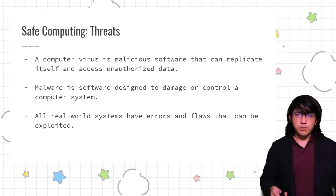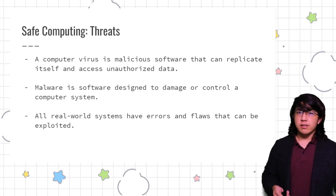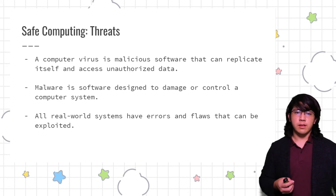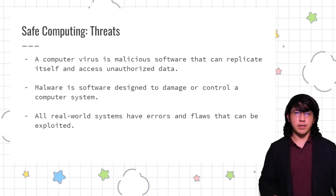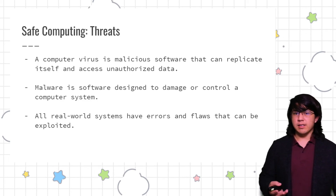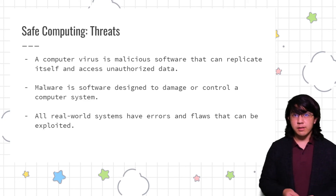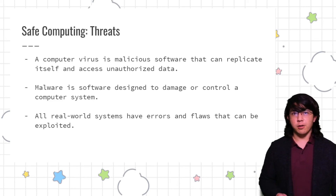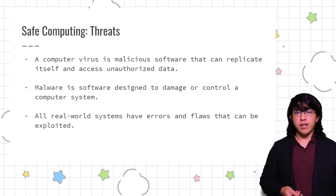There are some dangers when using computers — people do use computers maliciously. They might write viruses: software that works just like a biological virus, getting into your computer, replicating itself, and gaining access to places you don't want it. Malware is software designed to damage or even control your computer system, making it participate in a botnet for things like distributed denial of service attacks. Even things not built maliciously at first can have errors and flaws that might be exploited — computers are physical circuits, and you could even manipulate the electromagnetic field from currents running through a CPU to mess with memory and other parts of the circuit.